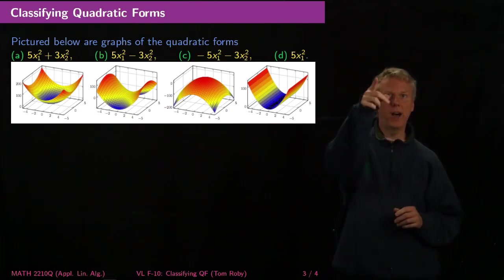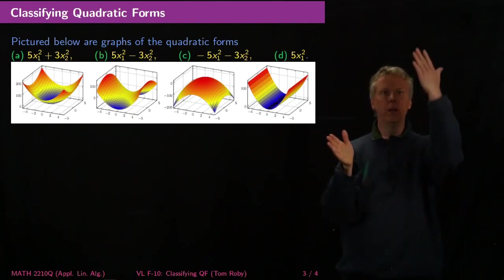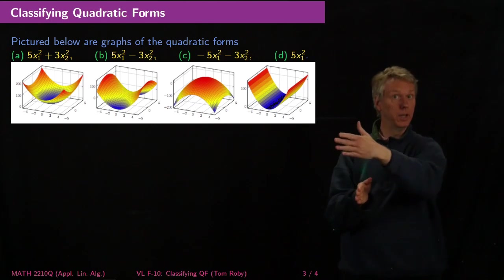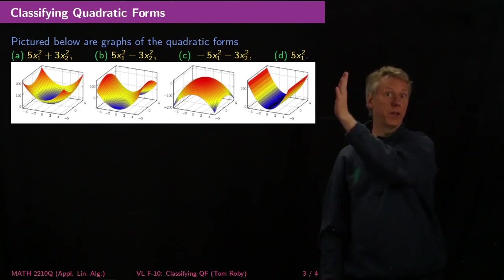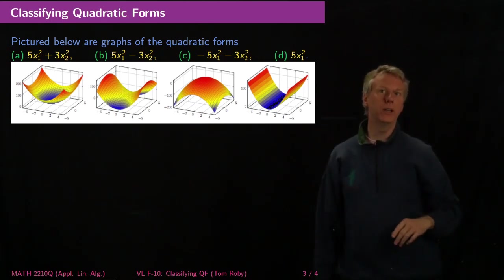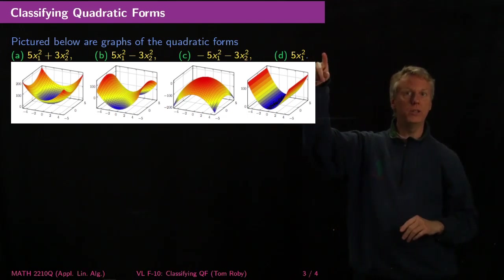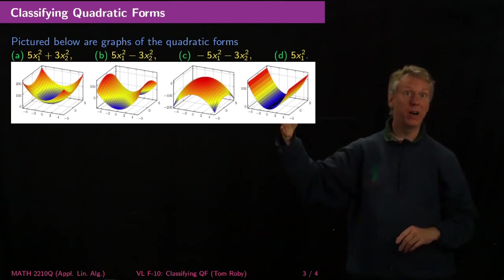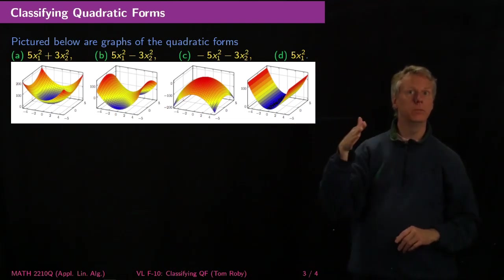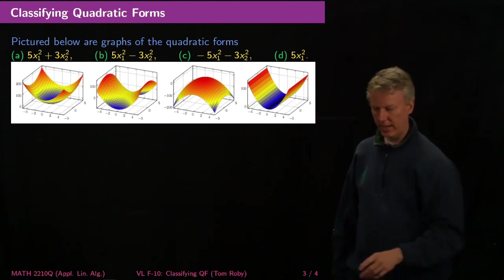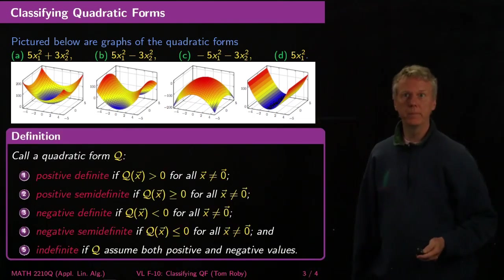Whereas the 5x1 squared looks like a parabola if you slice it this way, but looks like straight lines if you slice it that way. That should make sense from the equation, because if I change y, it doesn't actually change this quadratic form. Along values of constant y, I should have the same thing.